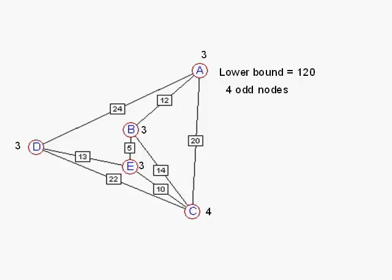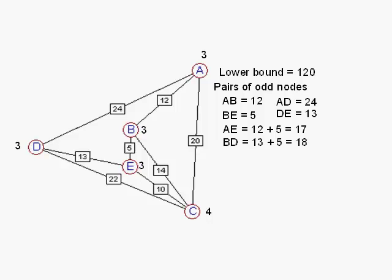We have four odd nodes. We have to find pairs of odd nodes. The pairings of odd nodes, there are six possible pairings, and those are the shortest distances between the various odd nodes. It is occasionally necessary to perform Dijkstra's algorithm to find the shortest route between two nodes. Usually at this level you won't have to do that, but beware that it might be a possibility.